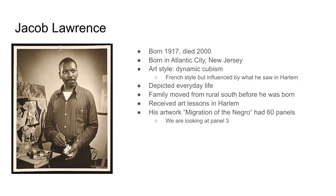The first artist we'll be discussing today is Jacob Lawrence, who was born in Atlantic City, New Jersey in 1917 and passed away in 2000. The art style he is most known for is dynamic cubism, which was a French style, but he applied it to the everyday life he saw in Harlem. He received art lessons in Harlem and combined the artistic technique he learned in those lessons with the life he experienced.